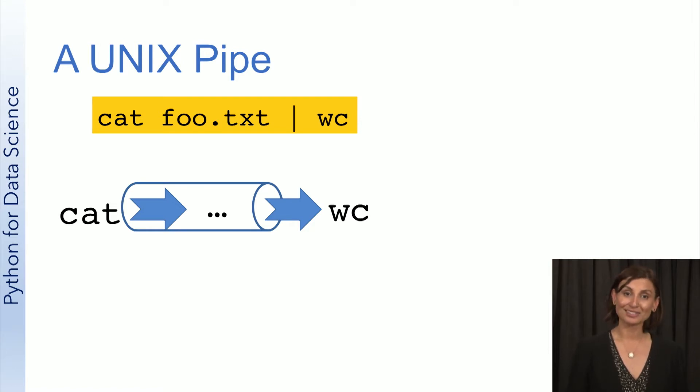However, in some special cases, the command does something with the input it receives through the pipe, just like wc here to count the contents of the file given to the cat command. We call such commands filters.